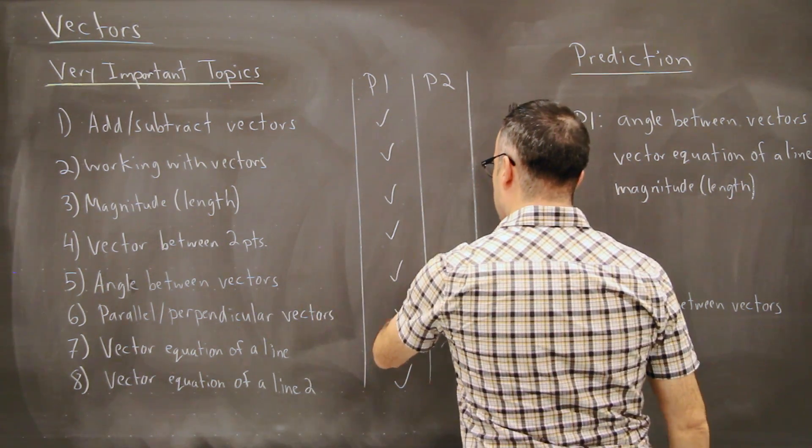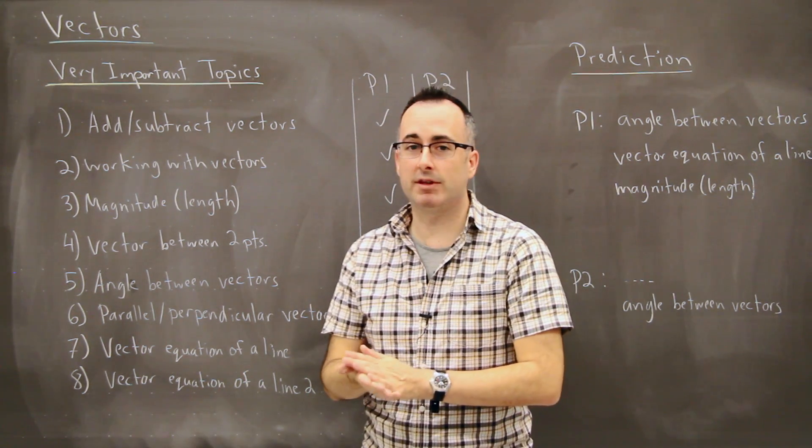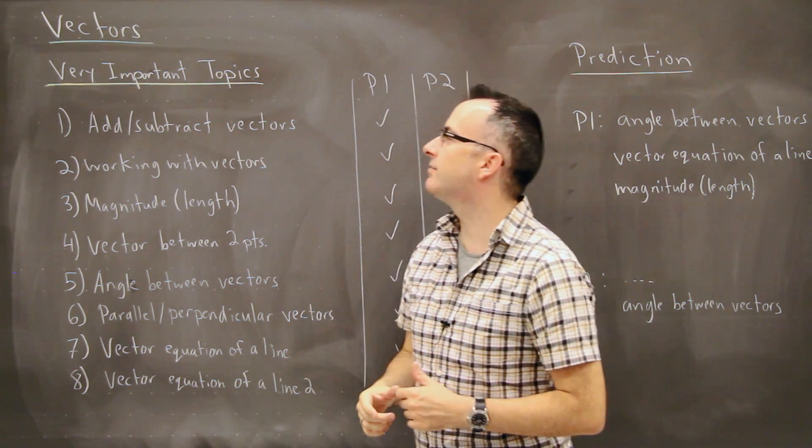You might get some on paper two but not very much. If you have anything on paper two it'll be this one right here. So I'll talk about them in a little bit more detail. Maybe I should start off with a really bad story about vectors.